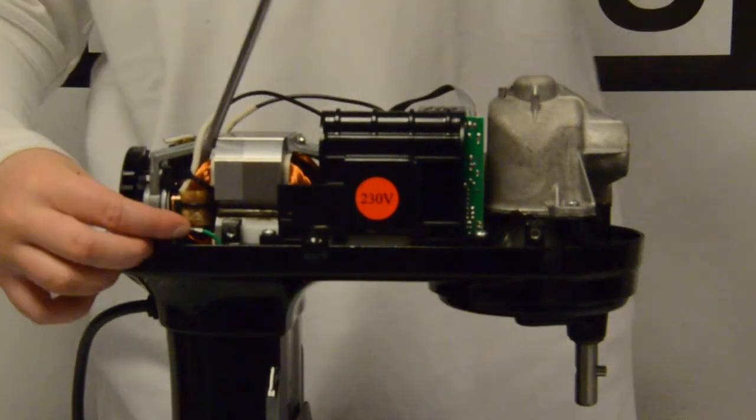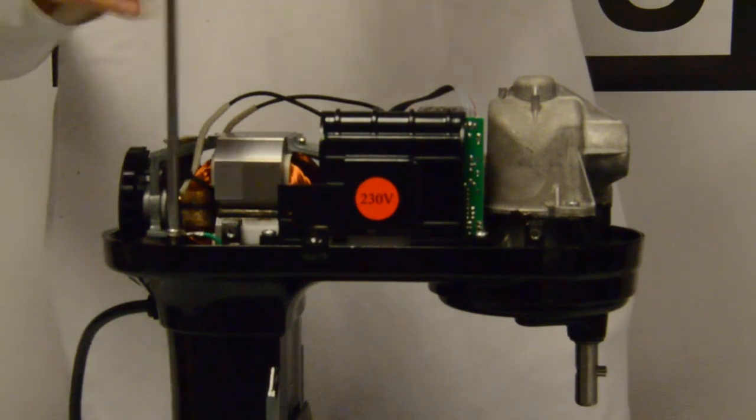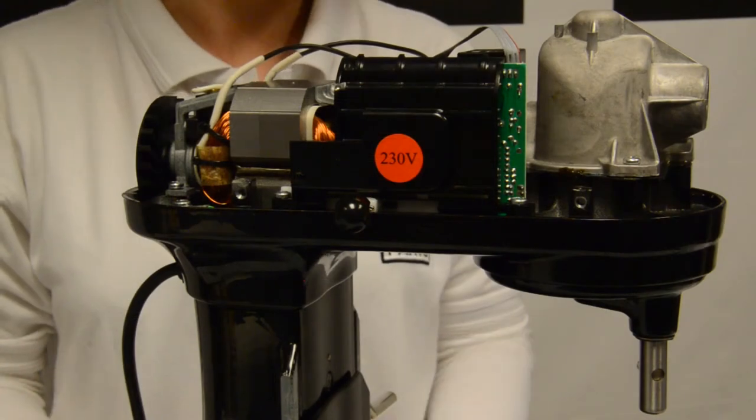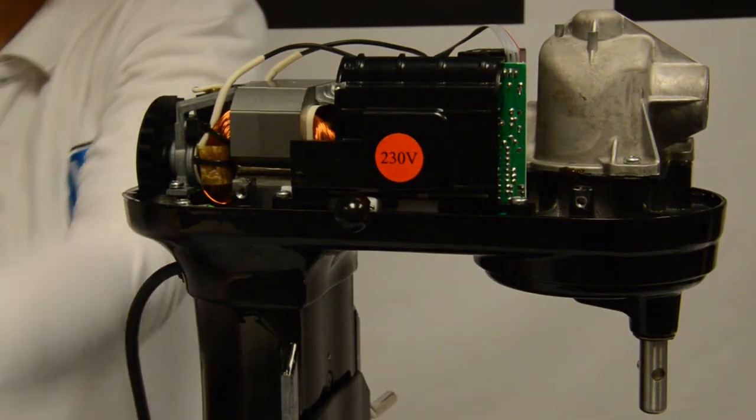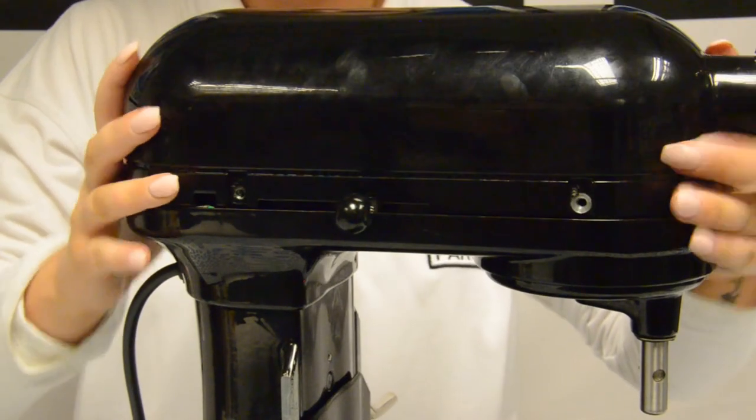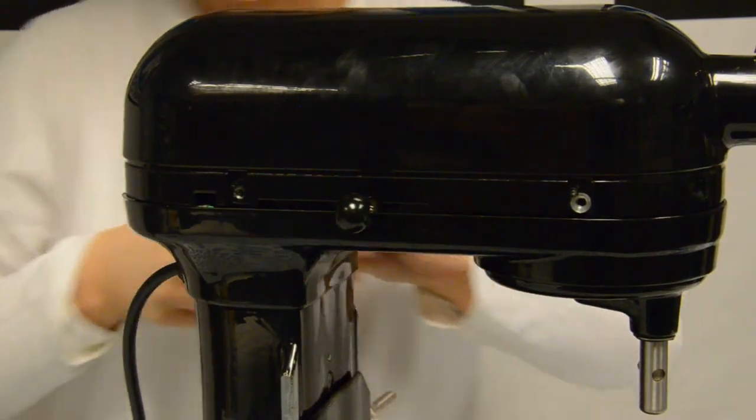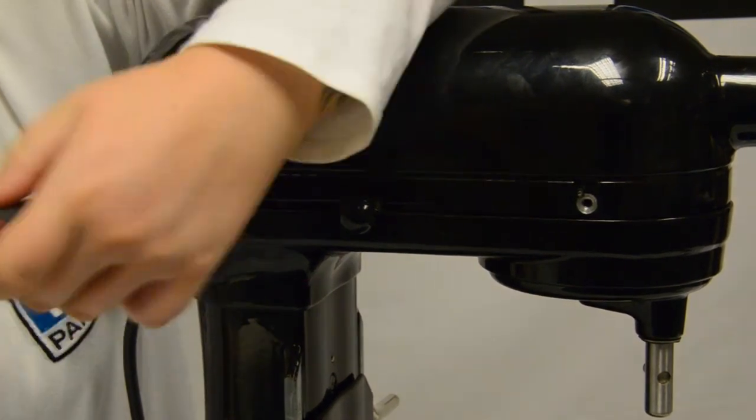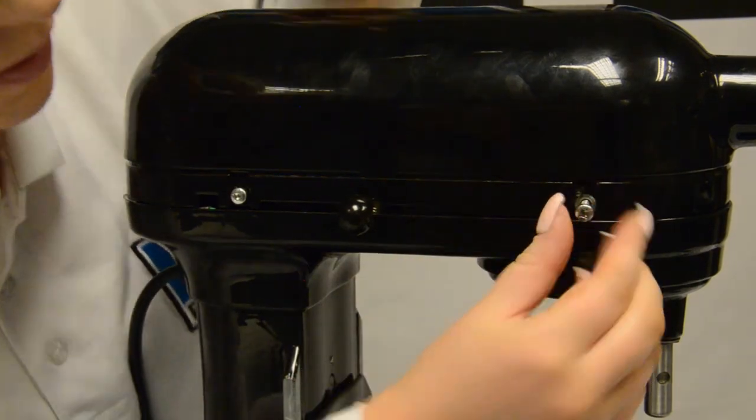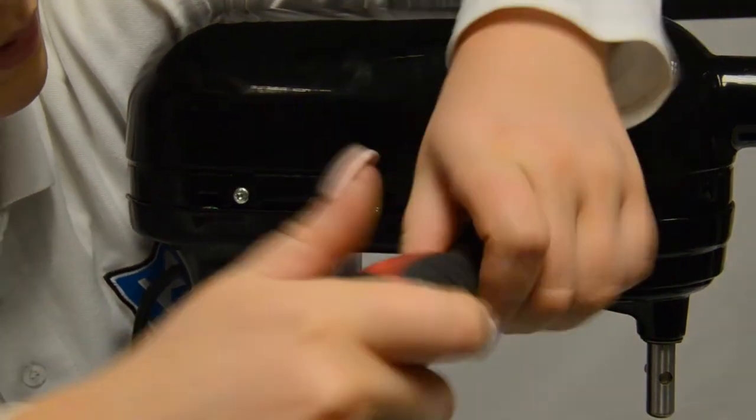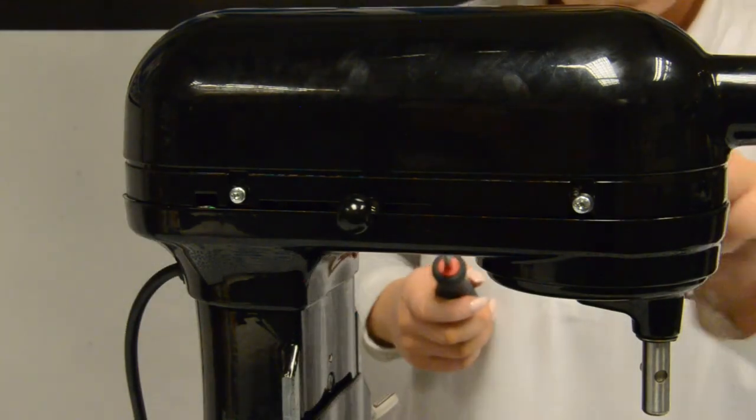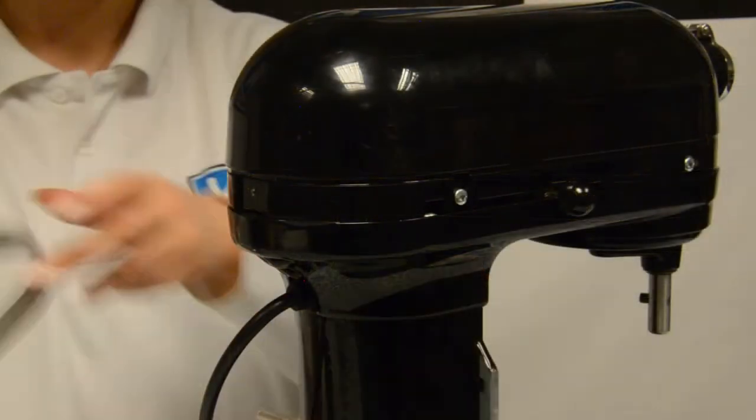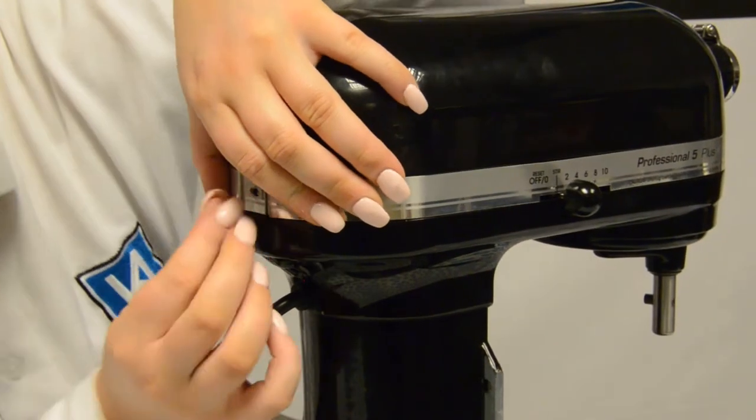We have now changed all the parts to 230 volts. Carefully place the head back on the mixer. Then screw the two screws on the head back in. Finally, place the trim band back around the mixer and screw it back on.